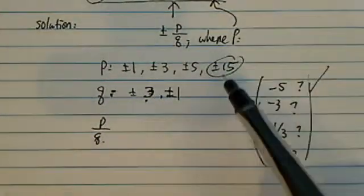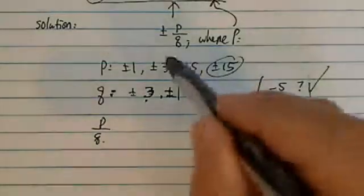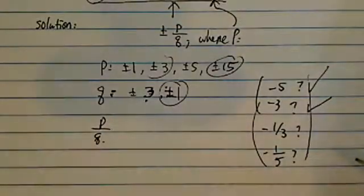Is minus 3 possible? Well, plus minus 15, oh, here's plus minus 3, and divided by plus minus 1. So that one is also possible.